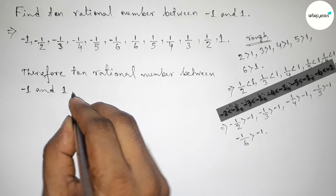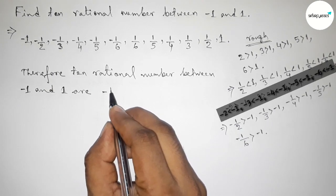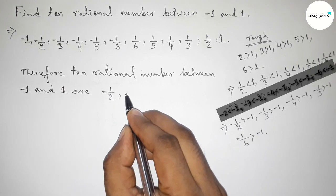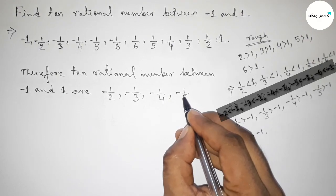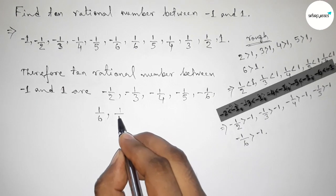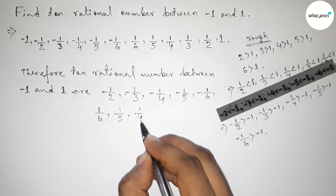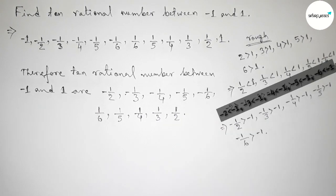Therefore, the required 10 rational numbers between minus 1 and 1 are: minus 1/2, minus 1/3, minus 1/4, minus 1/5, minus 1/6, 1/6, 1/5, 1/4, 1/3, and 1/2. By this way you can find 10 rational numbers between minus 1 and 1. Thanks for watching — if this video is helpful, please share it.